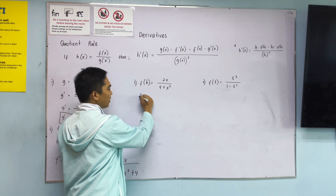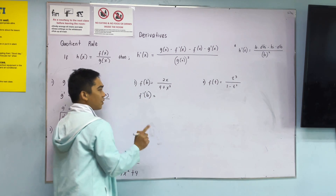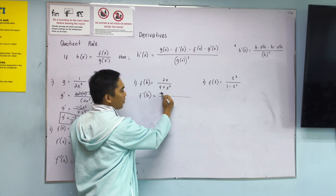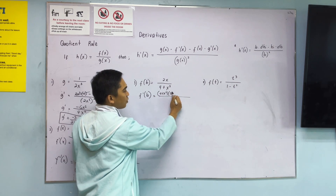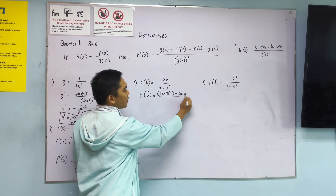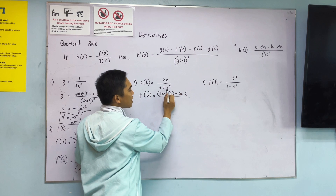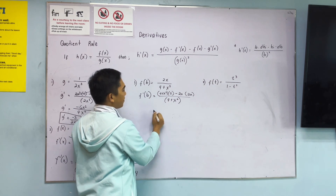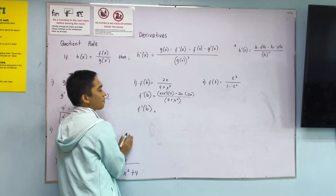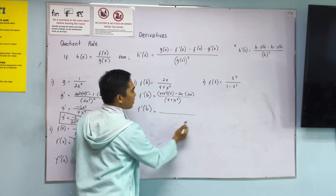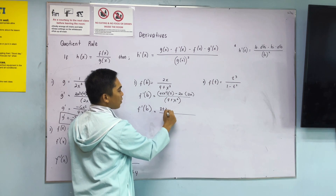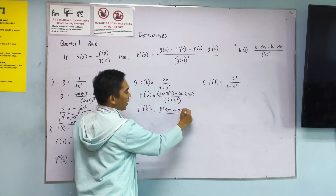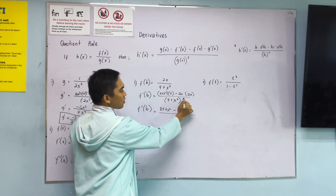Can you try number 3? You can pause the video, then resume when you're done. So copy 4 plus x squared times the derivative of the numerator, which is 2, minus copy the numerator times the derivative of the denominator, which is 2x. All over 4 plus x squared squared.